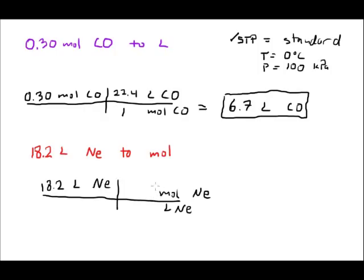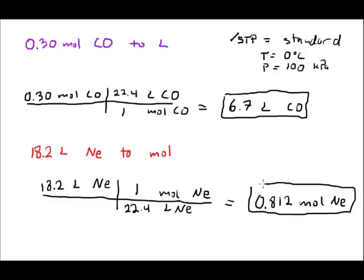And again, assuming that this is at STP, one mole of a gas will have a volume of 22.4 liters. So I will take my value, 18.2, and divide that by 22.4 to find my solution. This will work out to give an answer of 0.812 moles of neon. And I'll just put a box around my final answer, and then we'll be done.